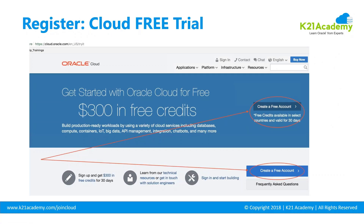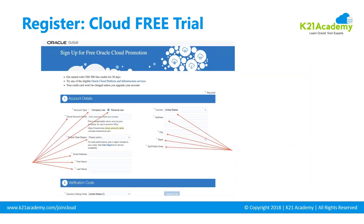When you click Try for Free, you get a page — which may differ as Oracle updates their pages — with a button called Create a Free Account. Clicking it takes you to a sign-up page where you select account type as Company Use or Personal Use. In the activity guide we selected Personal. Then choose your country — make sure you use the correct country where your credit card is registered. Use the correct address, ideally the same as your credit card's registered address. Pick a cloud account name you can remember — you'll also receive it by email.